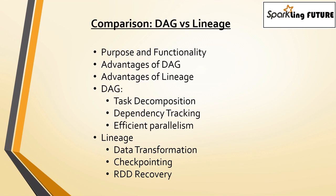And if you take the lineage, a lineage tracks the sequence of data transformations applied to the RDDs. It also provides checkpointing, meaning intermediate RDDs are periodically checkpointed to enable fault tolerance. And if any RDD is lost or corrupted, lineage enables its recreation using the recorded transformations — that is what RDD recovery means.